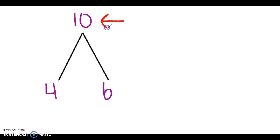At the top of our math mountain we have our total and the two numbers at the bottom we refer to as our add-ends. Now with these numbers we can start to make addition and subtraction equations.